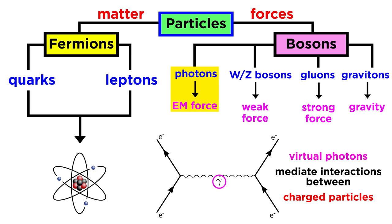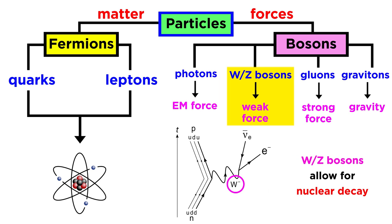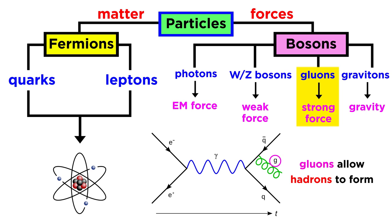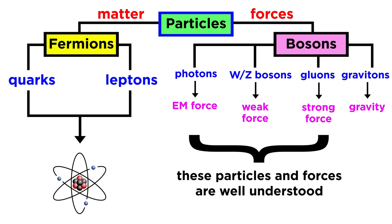Electromagnetism is mediated by photons, the weak nuclear force by W and Z bosons, and the strong nuclear force by gluons. These particles have all been confirmed experimentally and are quite well understood.